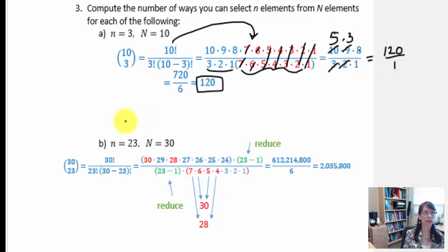Finally, in our last example, we have n equals 23 and capital N equals 30. This means we have a total of 30 elements in the set and we are wanting to make groups of 23. How many ways can this be done?